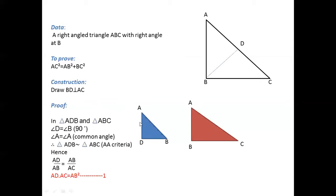And similar triangle property is that the corresponding sides will be equal. So AD by AB will be equal to AB by AC. We have taken AB and AC. Cross multiply: AD into AC will be equal to AB into AB, that is AB squared.